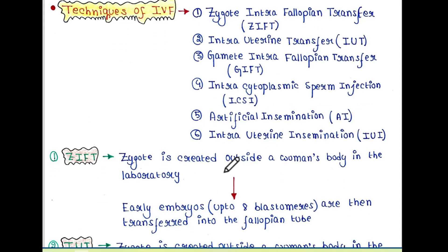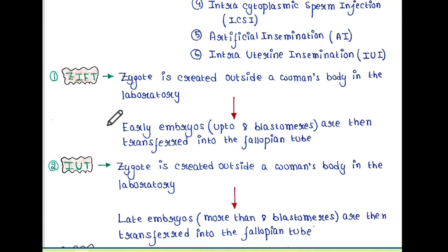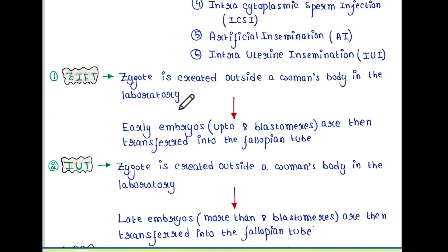First is ZIFT. In this case, the zygote is created outside a woman's body in the laboratory, and the early embryo — that is, up to 8 blastomeres — is then transferred into the fallopian tube of the woman.